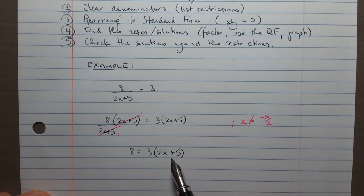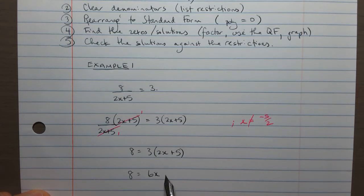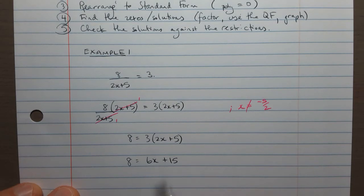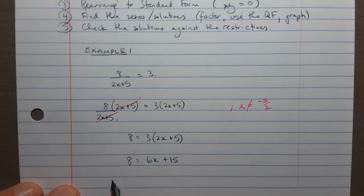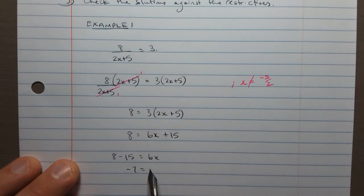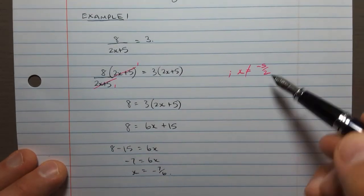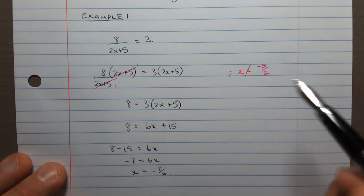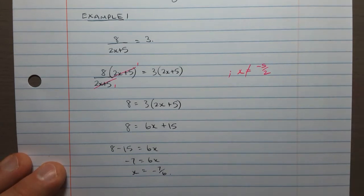And now we rearranged to standard form. So for us, that means we're going to need to simplify over here by expanding with the distributive property, and then you can just rearrange this in whatever way you usually do. I'm going to do this. So x is negative 7 sixths. And this is where I check, is that the same as the restriction from before? It is not the same, and so we're okay. This is the actual solution.